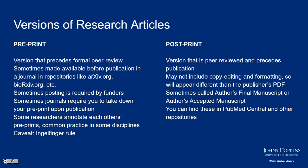The differences between versions: a preprint is the version of a research article that precedes formal peer review, sometimes made available before journal publication in preprint repositories like arXiv, bioRxiv, or medRxiv. Sometimes journals require you to take down your preprint upon publication or link to the final publisher's PDF. A postprint — also called an author's accepted manuscript — is peer reviewed and precedes publication; many are in PubMed Central and are very similar to the version of record, differing mainly in copy editing, formatting, and page numbers.